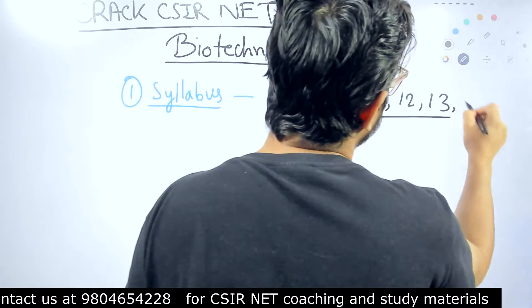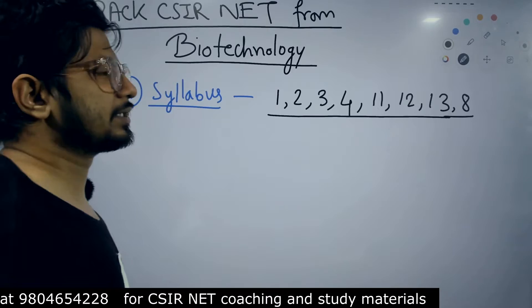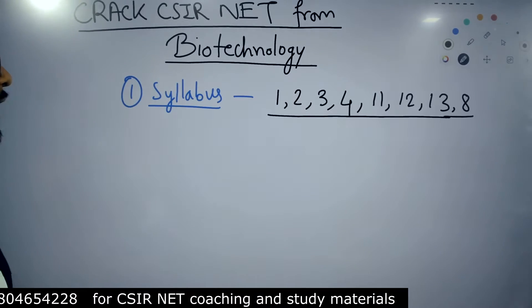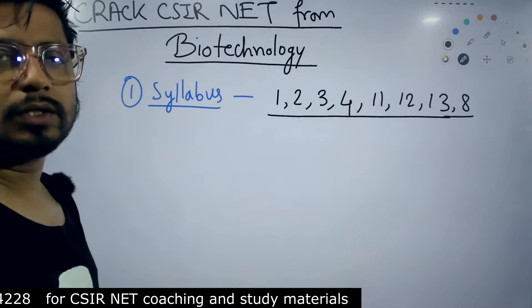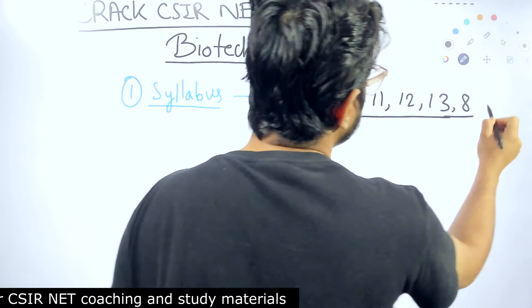And genetics is another unit. Obviously, I forgot always. Genetics is another unit. So, these are units that are similar from the biotechnology syllabus of yours to that of the CSIR NET syllabus. How many units? 3, 6, 8.